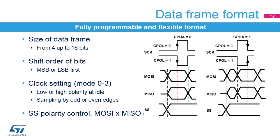The clock can be set to one of four basic configurations defined in the Motorola SPI specifications. The combination of two bits controls the polarity and phase of the clock signal. When the phase control bit is cleared, data bits are sampled on the odd clock edges and the even clock edges synchronize the shifting of the next bit onto the data line. This is the opposite when the phase control bit is set. The clock polarity bit defines the idle state of the clock signal and which clock edge is used for data sampling or shifting.